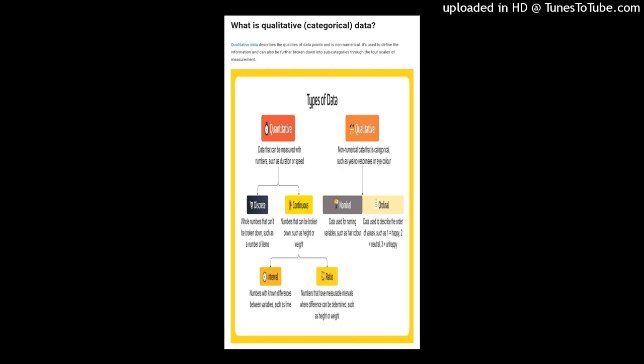The ordinal scale of measurement defines data placed in a specific order where values are ranked. There is no information specifying what differentiates the categories from each other, and these values can't be added to or subtracted from. An example includes satisfaction data in a survey — one equals happy, two equals neutral, three equals unhappy. Where someone finished in a race also describes ordinal data: first, second, and third place show the order, but don't specify how far ahead the first place finisher was from the second.